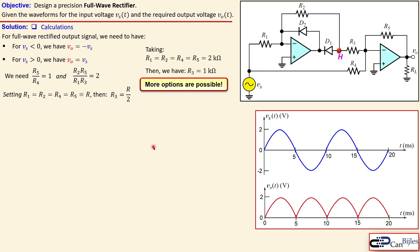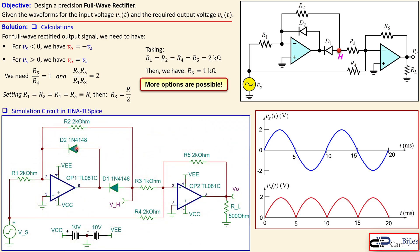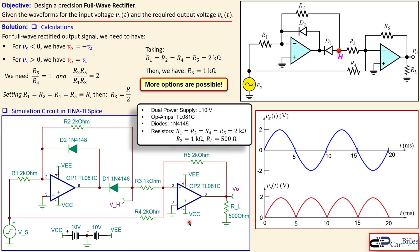Let's look at the simulation circuit in TINA-TI SPICE. Here is the exact same circuit configuration: R1 and R2 are 2 kΩ, R4 and R5 are also 2 kΩ, and R3 is 1 kΩ. We have selected diodes 1N4148 and op-amps TL081C for both OP1 and OP2, with a dual supply of ±10 V. A load resistor of 500 Ω is included to avoid clipping from excessive current draw.